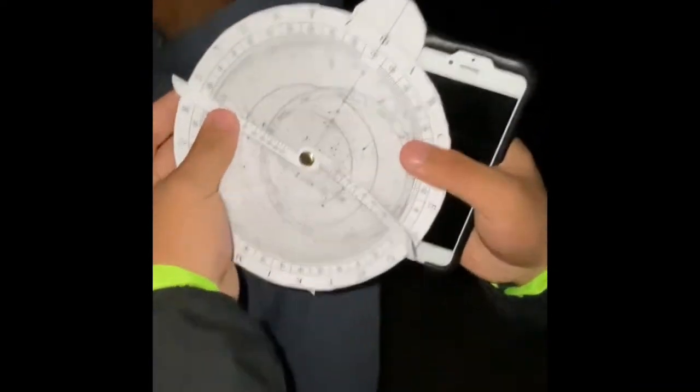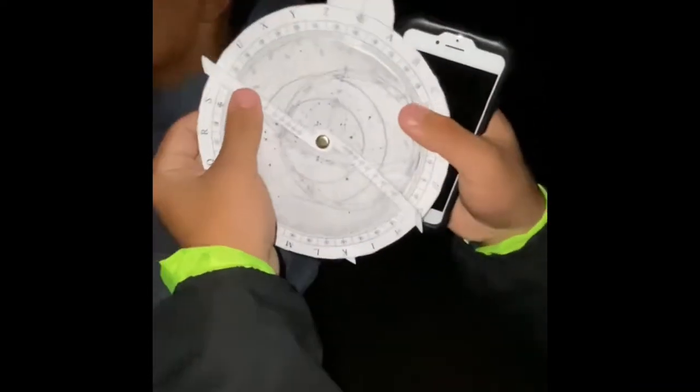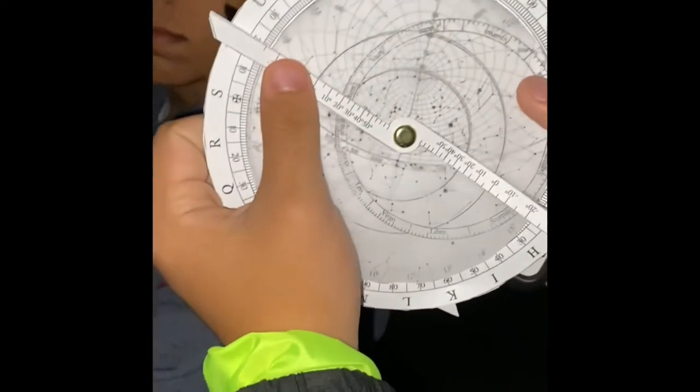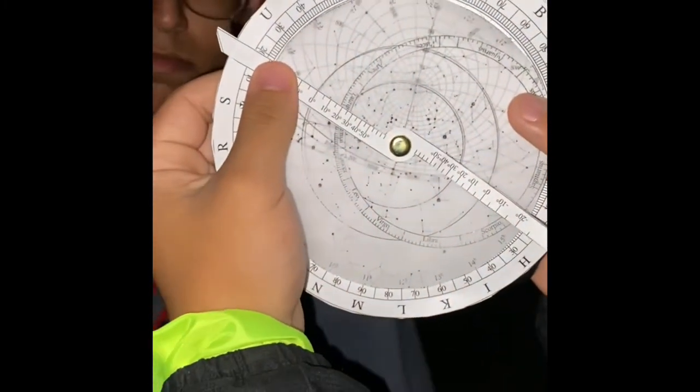And once you find that constellation in your astrolabe, you're going to find the degrees. So it's about 20 degrees. You line it up with the horizon, you measure it, and it's about 20 degrees.